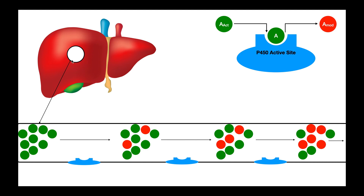As these drugs pass through the liver, more and more of them become inactivated until, once they get through the liver, some percentage of drug A has been inactivated as denoted by the red dots. There are some that are still active, shown in green. Eventually all of drug A will be totally inactivated and eliminated.